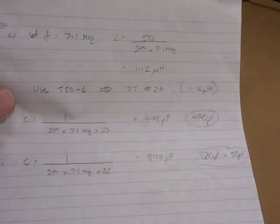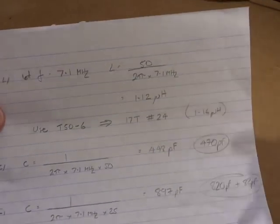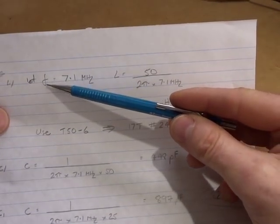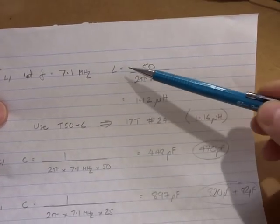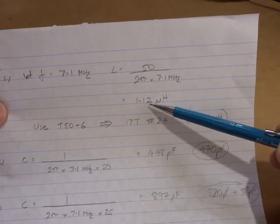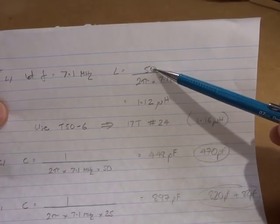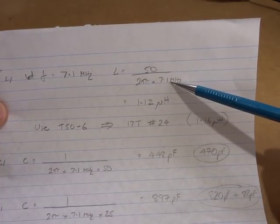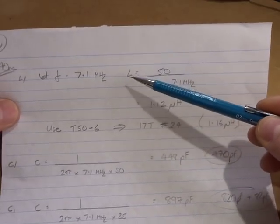Now for the 40 meter version, same approach, but in this particular case I will set F at 7.1—our frequency at 7.1 megahertz. Again, solving for our two inductors comes out at 1.12 microhenries, by just substituting 50 ohms and our 7.1 megs into the inductive reactance formula and making our inductance the subject.